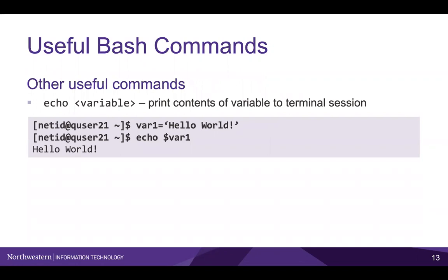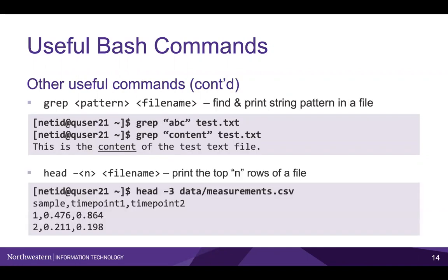Another handy bash command is echo. echo is used to print something, such as the contents of a variable. In the example on the slide, we create our own variable named var1 and print it using echo. Please note that in bash, we always use the dollar sign to point to a variable. The grep command helps you search for a specific string pattern. In the example on the slide, we first use grep to look for the sequence abc in our test.txt file, but no results are returned since this pattern does not exist in this file. When we try searching for the word content, grep successfully returns the row of the file that contains this pattern.